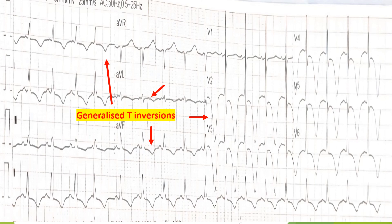One important point to understand is that these T wave inversions are not localized to some areas — they are more generalized in nature. We can see T wave inversions in the lateral leads: I, AVL, V5, V6; the anterior leads V2, V3, V4, V5; and the inferior leads as well. This means this is a process that has involved the heart globally.